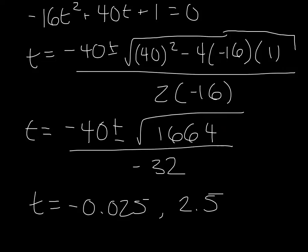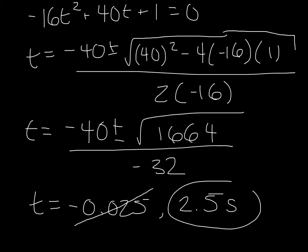After doing the computations, I came up with t equal to negative 0.025 and 2.5. Since we're talking about time, we cannot have negative time, so that answer goes out the window. Our final answer is 2.5 seconds. After the juggler throws the ball from 4 feet above the ground with an initial vertical velocity of 40 feet per second, after 2.5 seconds he will catch the ball at a height of 3 feet.